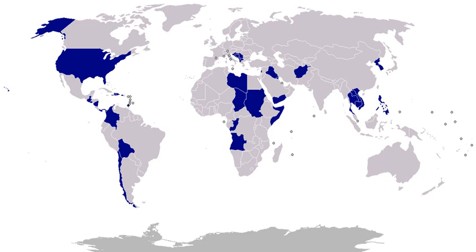1983, Chad: on August 8, 1983, President Reagan reported the deployment of two AWACS electronic surveillance planes and eight F-15 fighter planes and ground logistical support forces to assist Chad against Libyan and rebel forces. 1984, Persian Gulf: on June 5, 1984, Saudi Arabian jet fighter planes, aided by intelligence from a U.S. AWACS electronic surveillance aircraft and fueled by a U.S. KC-10 tanker, shot down two Iranian fighter planes over an area of the Persian Gulf proclaimed as a protected zone for shipping. 1985, Italy: on October 10, 1985, U.S. Navy pilots intercepted an Egyptian airliner and forced it to land in Sicily. The airliner was carrying the hijackers of the Italian cruise ship Achille Lauro, who had killed an American citizen during the hijacking.